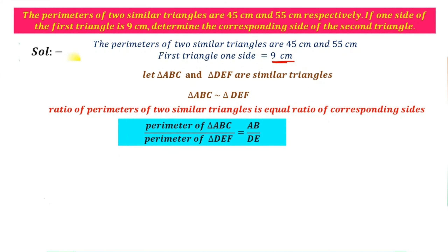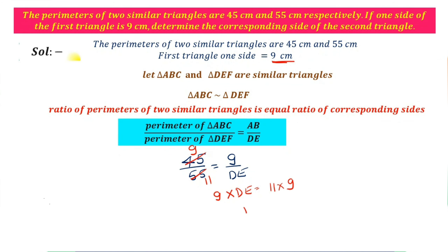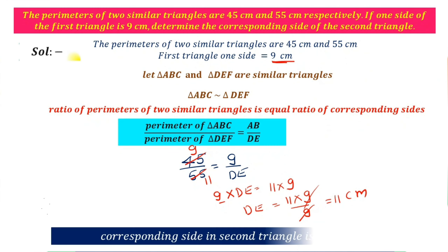Substitute the values: perimeter of triangle ABC is 45 cm, second triangle is 55. That equals 9 by DE. Cancel: 45 by 55 simplifies — 9 times DE equals 11 into 9. DE equals 11 into 9 divided by 9, which gives 11 cm. Therefore, the corresponding side in the second triangle is 11 cm.